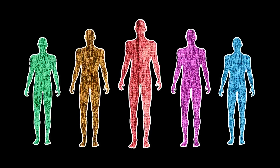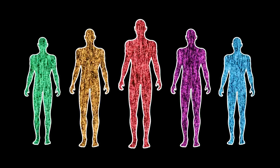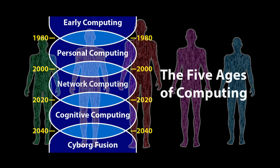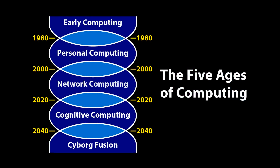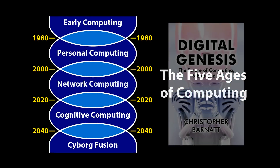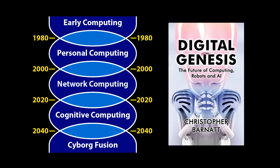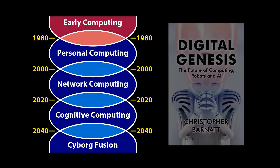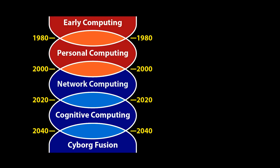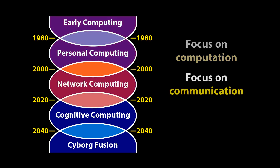To put this in context, let's turn to a model I call the Five Ages of Computing, introduced in my book Digital Genesis. This signals how the initial historical phases of early computing and personal computing had a focus on using computers to perform computation. But then, around 20 years ago, we entered the network computing age, in which computing has additionally been focused on communication.